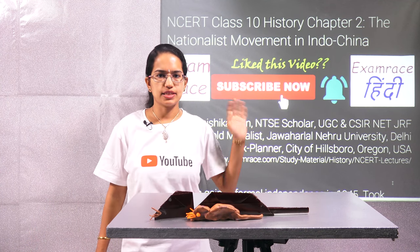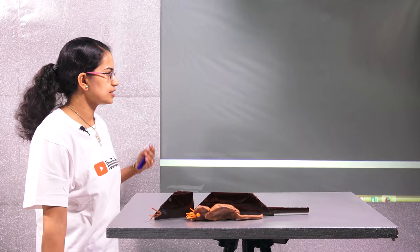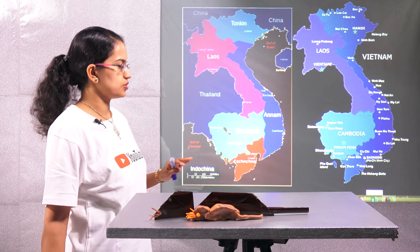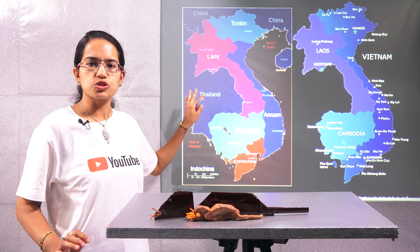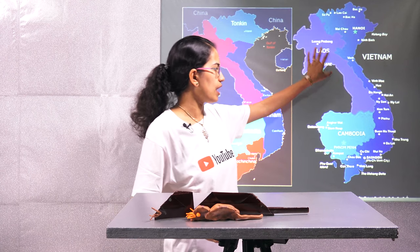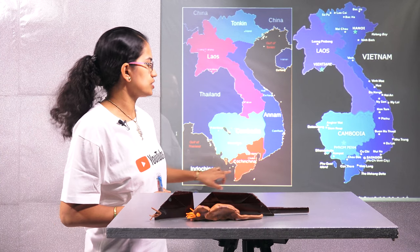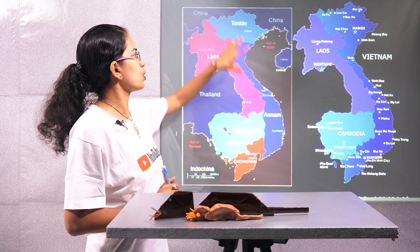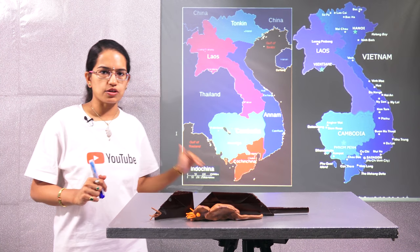We will start with the second chapter for Class 10th History. In this chapter we would focus on Indochina and the various independence movements that started in Indochina. Looking at the map, this is the map during the French period and this is the present day map. On the present day map you can see Laos, Cambodia and Vietnam — together these three countries form Indochina. During French occupation in Vietnam, Vietnam was divided into three regions: Tonkin, Annam and Cochin China. Cochin China was the southernmost part of Vietnam.